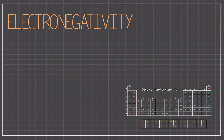Electronegativity is the relative ability of an atom to attract electrons to itself when it is part of a chemical compound. In a chemical reaction, elements with higher electronegativities tend to take the most electrons.